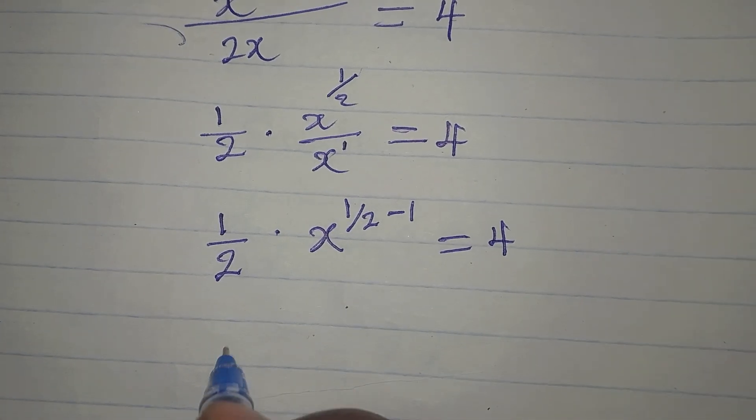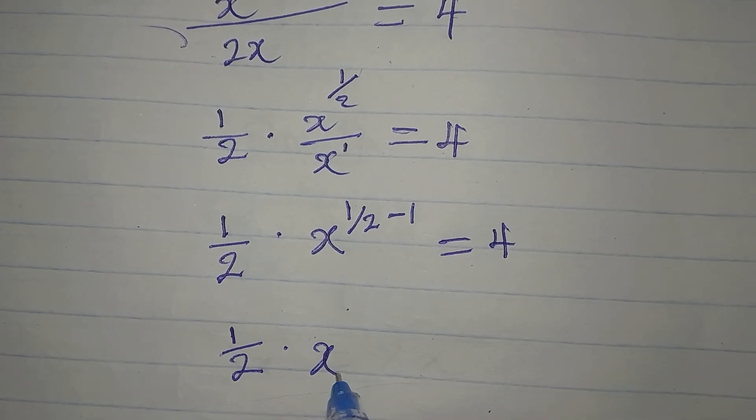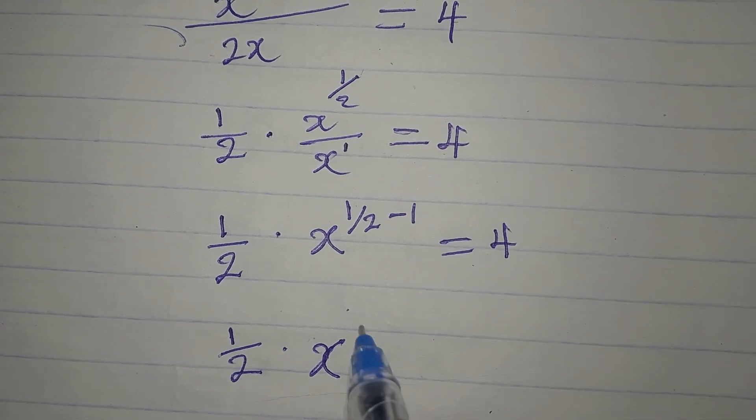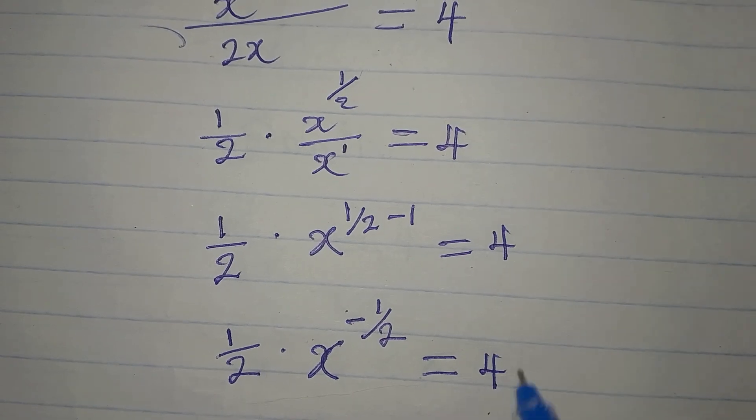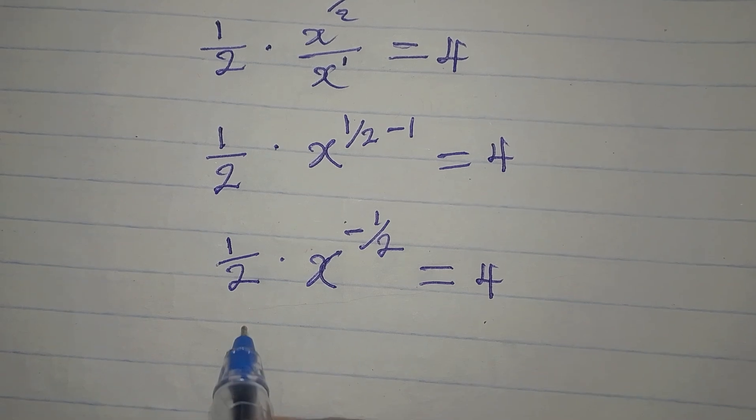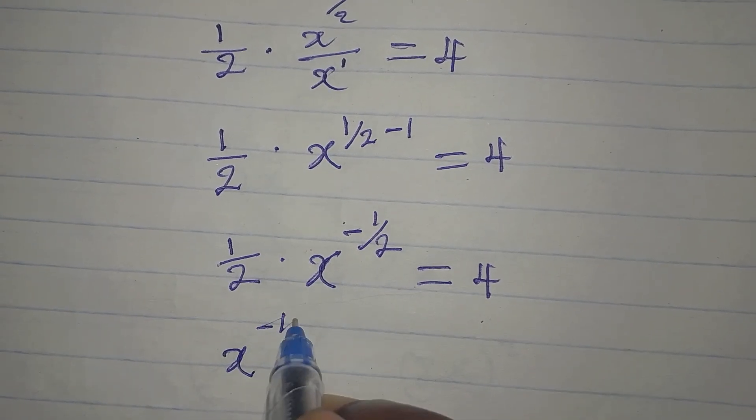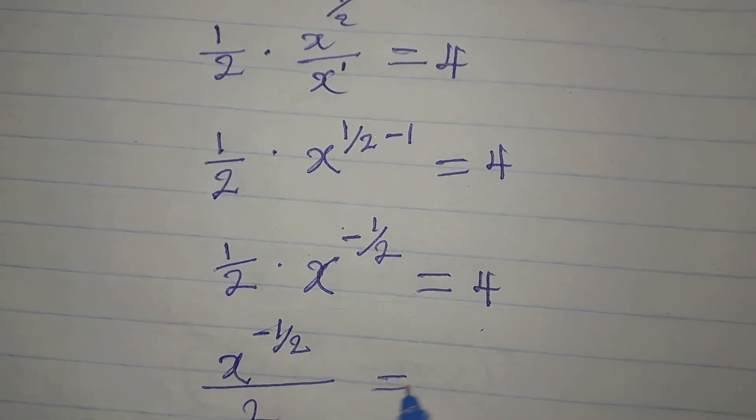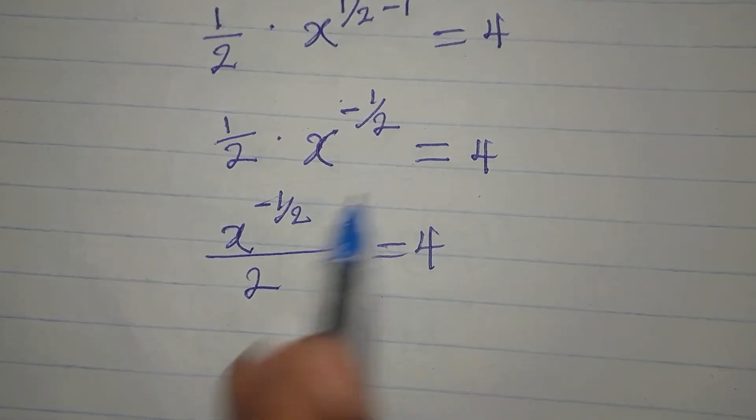So we have 1 over 2 times x to the power of 1 over 2 minus 1, which is minus 1 over 2. This is equal to 4. From here we can say this is the same thing as x to the power of negative 1 over 2, all over 2, equals 4, because the 2 will go under.